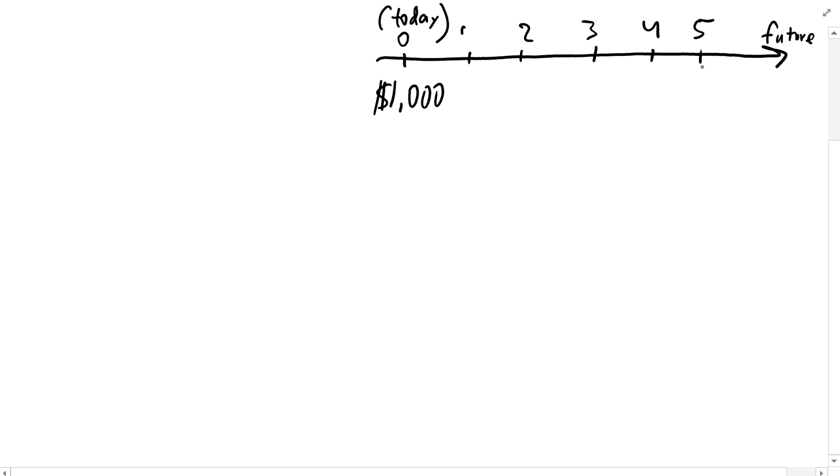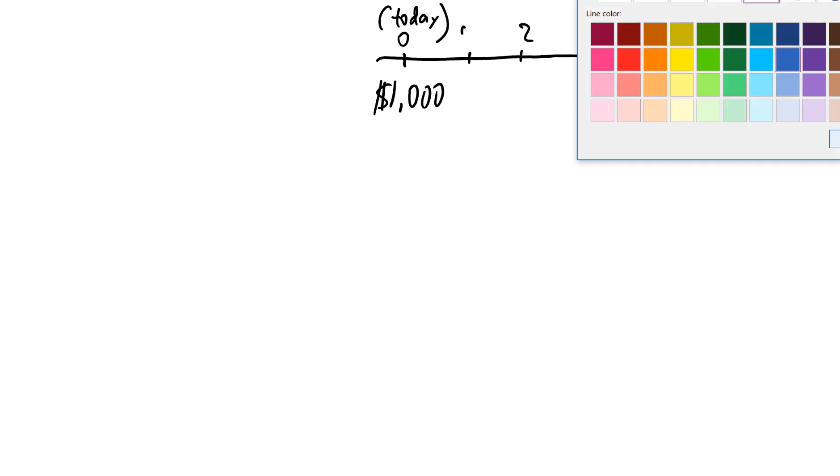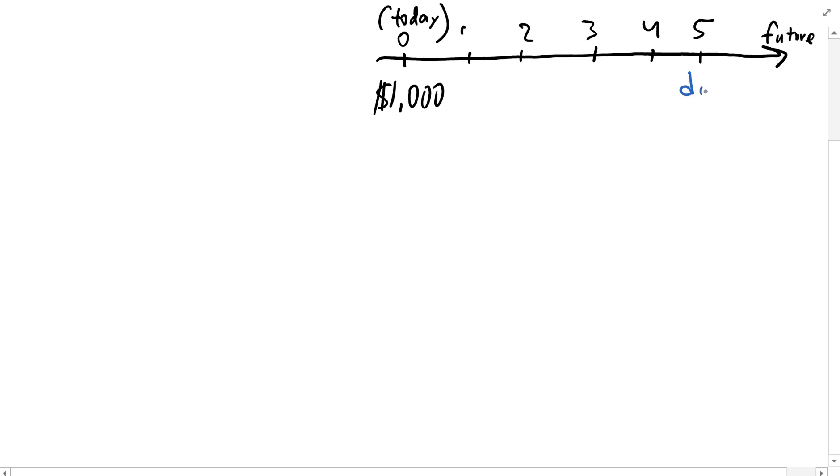And let's say in five years we want money to double. So what does doubling your money mean? It means today's $1,000 will become $2,000 after five years, and the question is, what should the annual interest rate be?